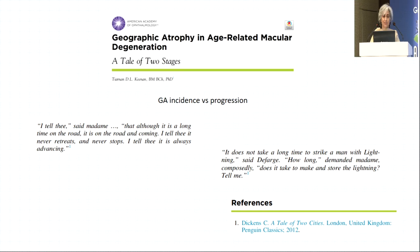I love this comparison of geographic atrophy incidence versus progression to Charles Dickens' A Tale of Two Cities: 'I tell thee, though it is a long time on the road, it is on the road and coming — it never retreats and never stops, it is always advancing.' That is what we think of geographic atrophy. But what we want to know is: it does not take a long time to strike a man with lightning, but how long does it take to make and store the lightning? Hopefully by the next IOS we'll have some answers. Thank you very much, and welcome to Chennai in June.